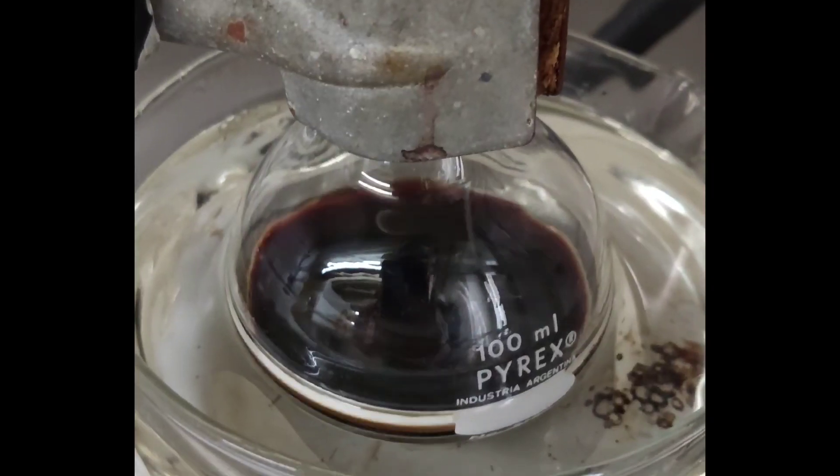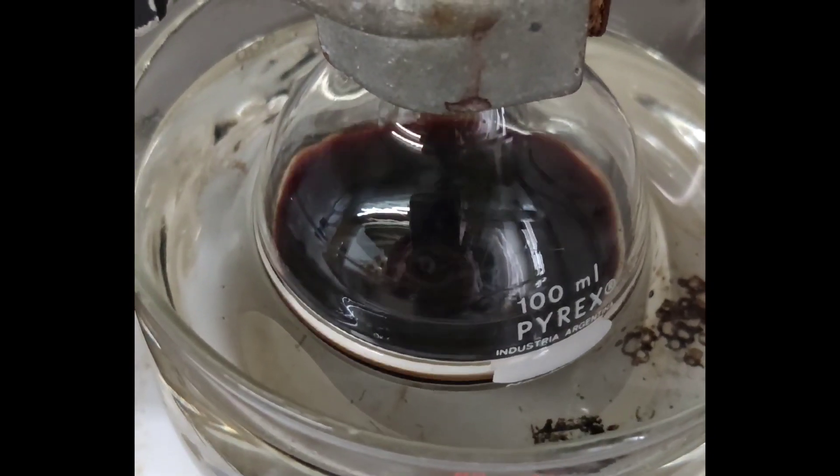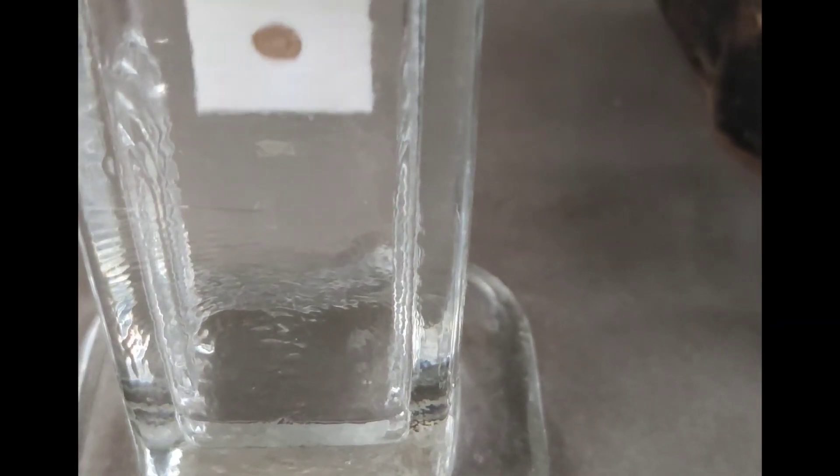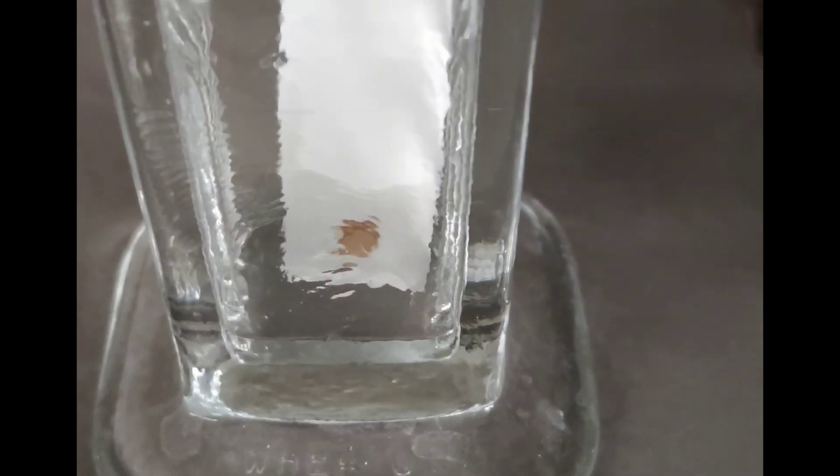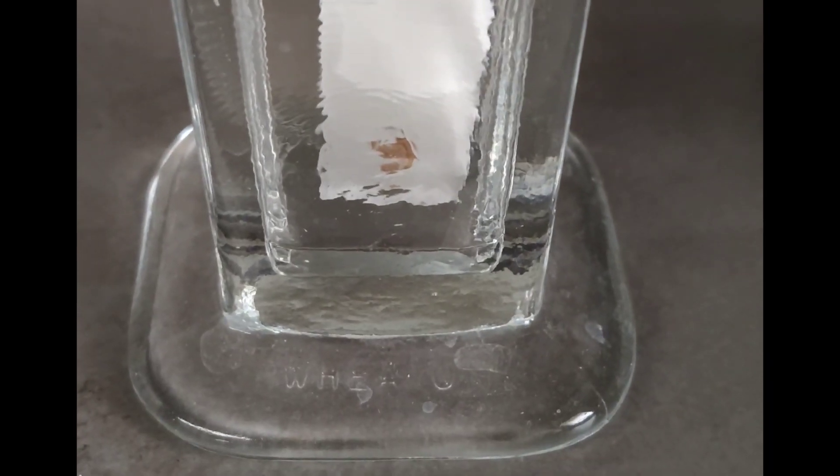The reaction mixture has a more reddish color. We check the reaction by TLC running in three parts hexane one part DCM. We have only one spot. The smear is due to the DMSO in the sample.